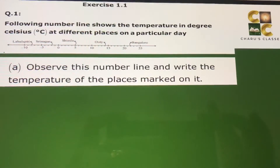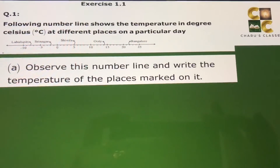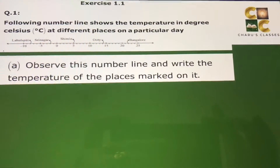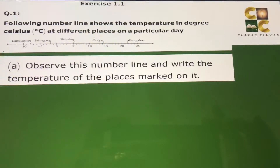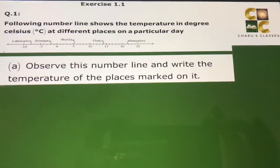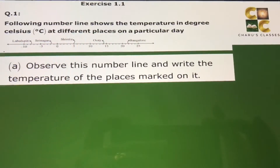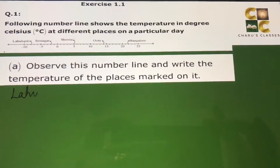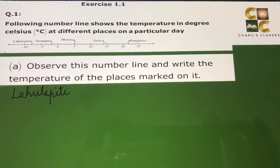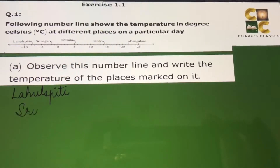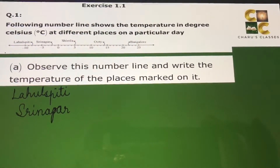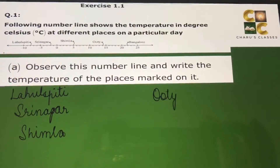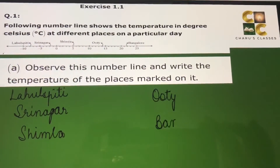Hello students, today we are going to do Exercise 1.1, Question Number 1. The following number line shows the temperature in degrees Celsius at different places on a particular day. Part A: observe this number line and write the temperature of the places marked on it. The places marked are Lahulspiti, Srinagar, Shimla, Ooty, and Bangalore.